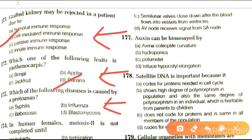Next question: which of the following diseases is caused by a protozoan? Options are syphilis, influenza, babesiosis, and blastomycosis. The answer is babesiosis. Babesiosis is a malaria-like parasitic infection caused by Babesia bigamina. Syphilis is caused by Treponema, which is a bacterium. Influenza is caused by influenza virus. Blastomycosis is caused by a fungus.